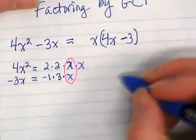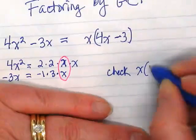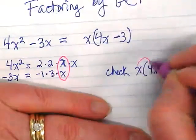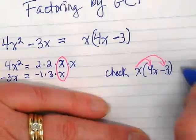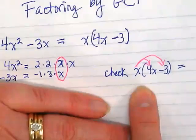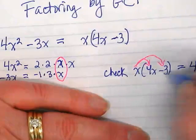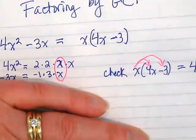Because how would I check this? I would say x times 4x minus 3. I would distribute this x back. And if it's right, we should come back to what we started with here. What's x times 4x? And what's negative 3 times x? And that's how we know that it checks.